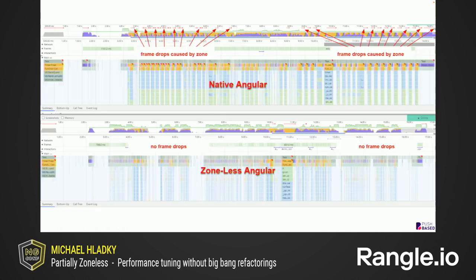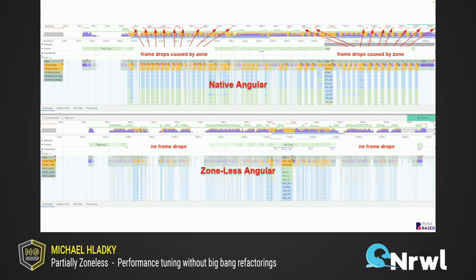The top shows a large-scale Angular application natively — like no changes, nothing. The lower image shows you how the flame charts work could be reduced if you tweak it a little bit, and if you go zoneless, at least for the parts that are executed here. So it's not the full application that is zoned, it's only a part. But you can already see the drastic improvement.